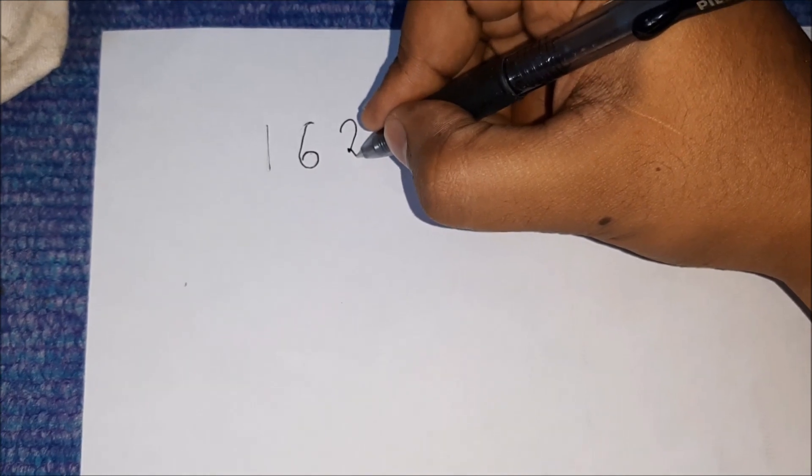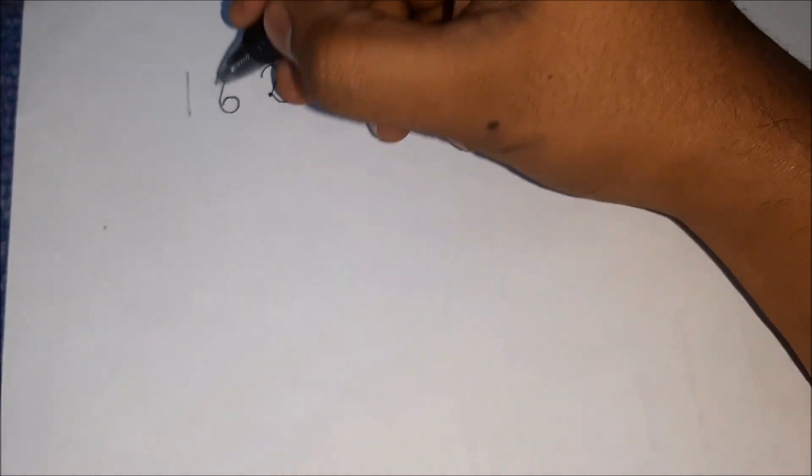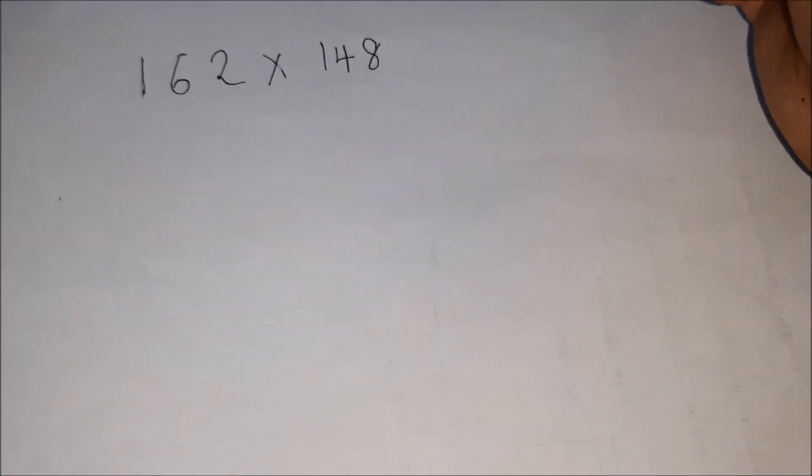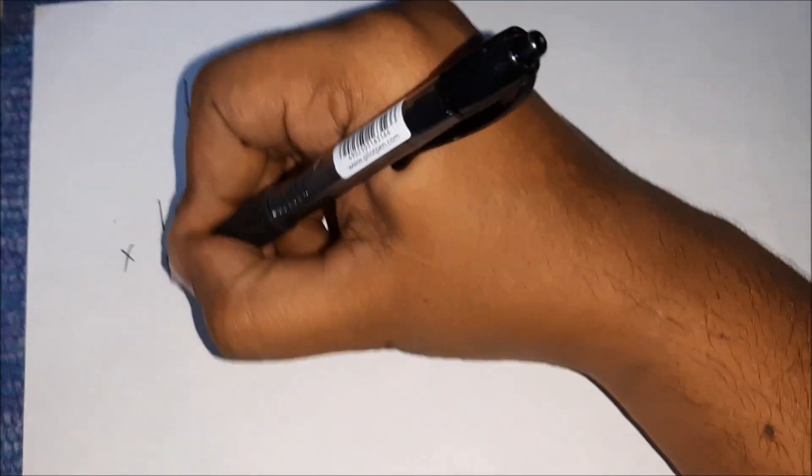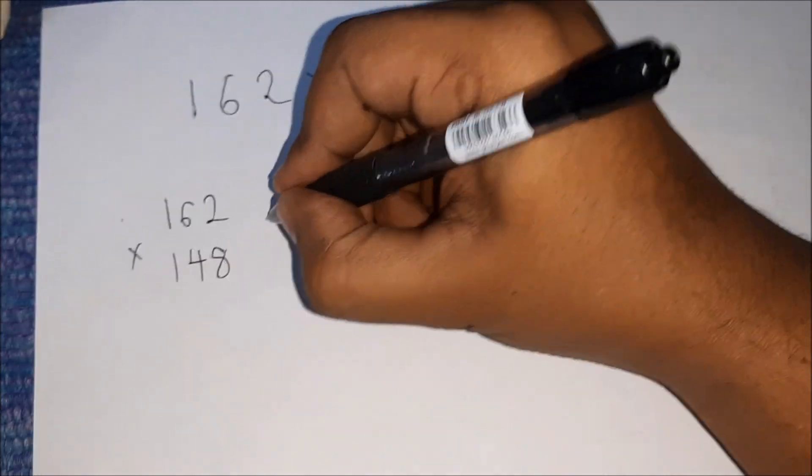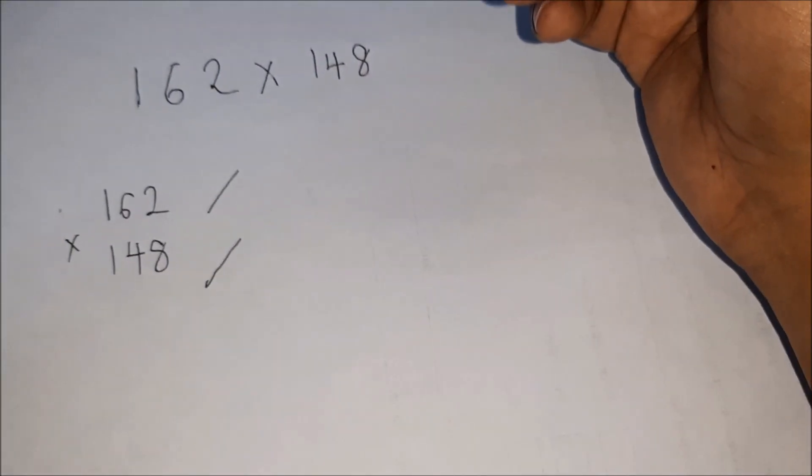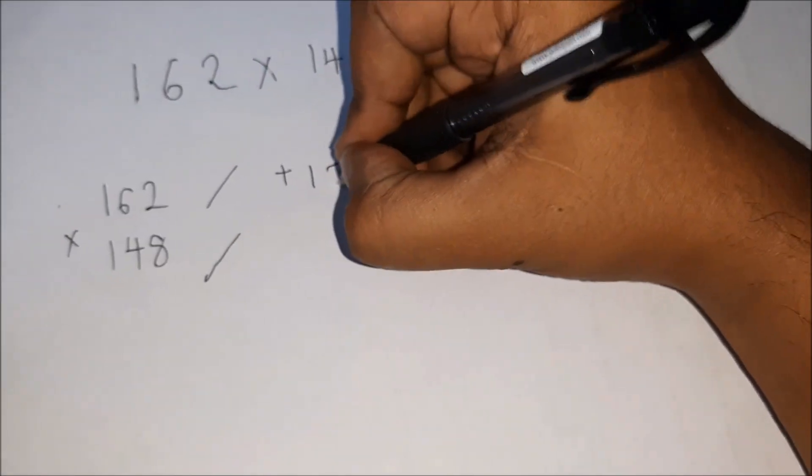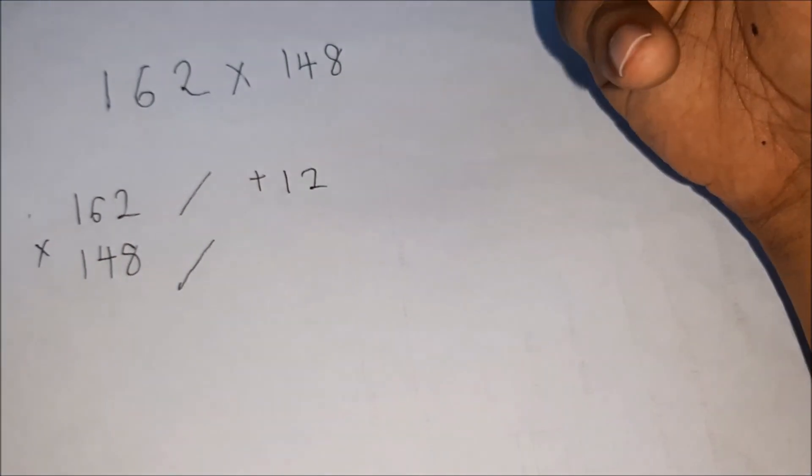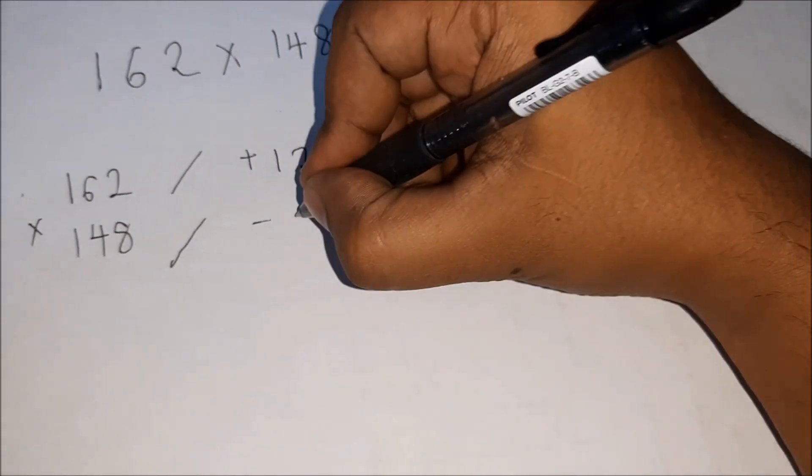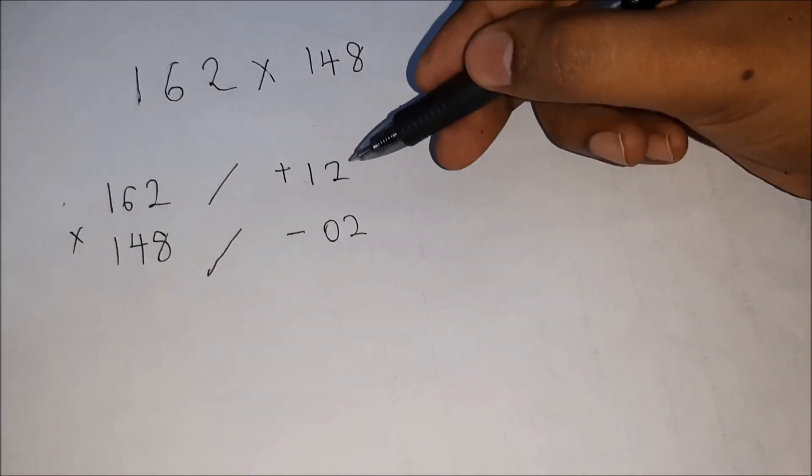I'll take 162 times 148, not too far from 150, right? So we're going to use the same method as we did in the previous videos. The difference of 150 from 162 would be positive 12, meaning 150 plus 12 would give us 162, and 150 minus 2 would give us 148.